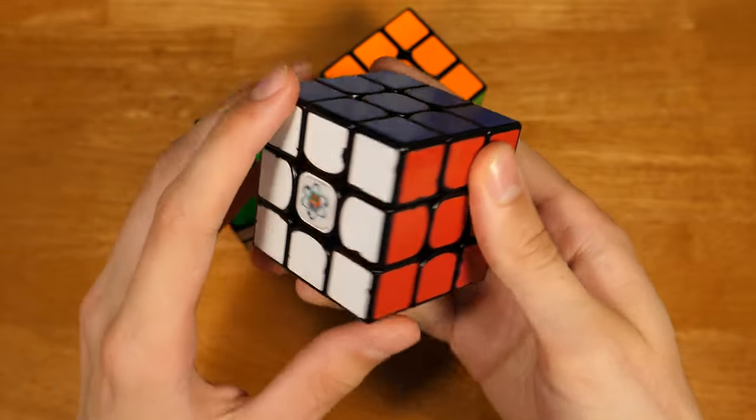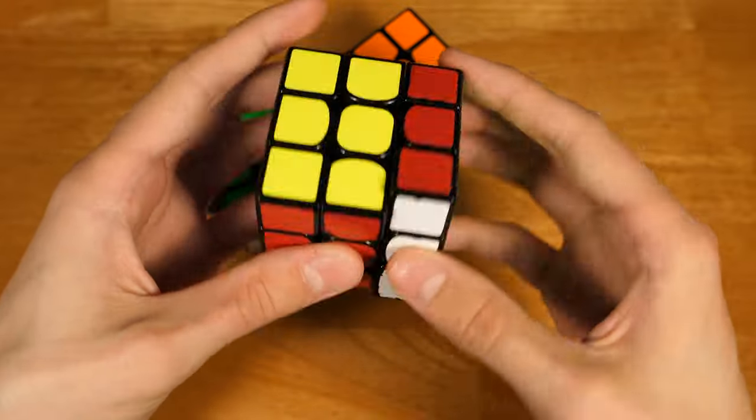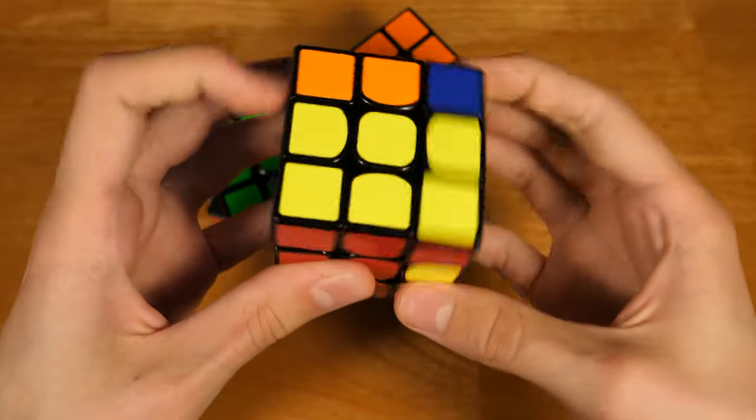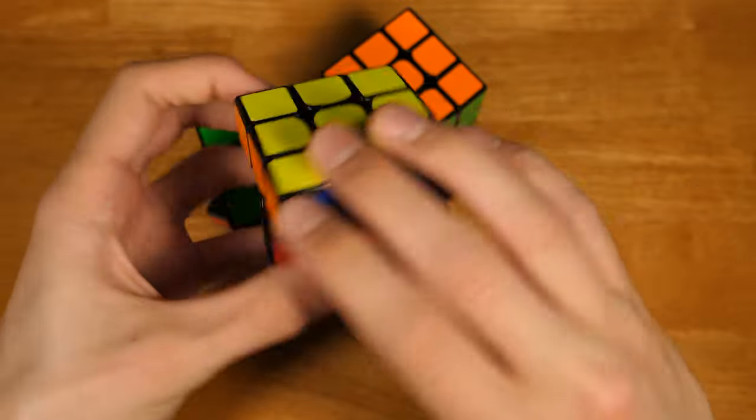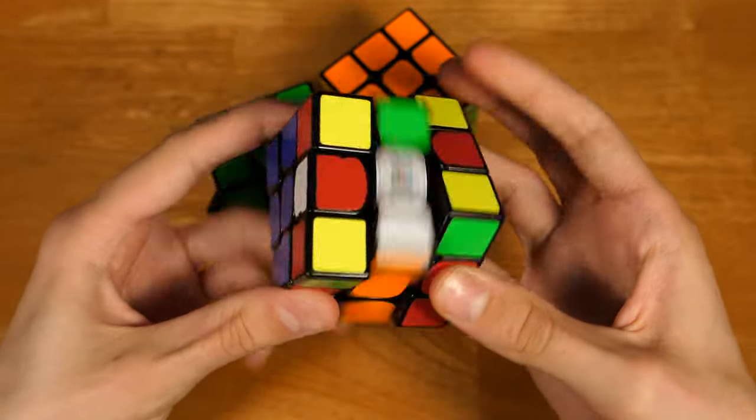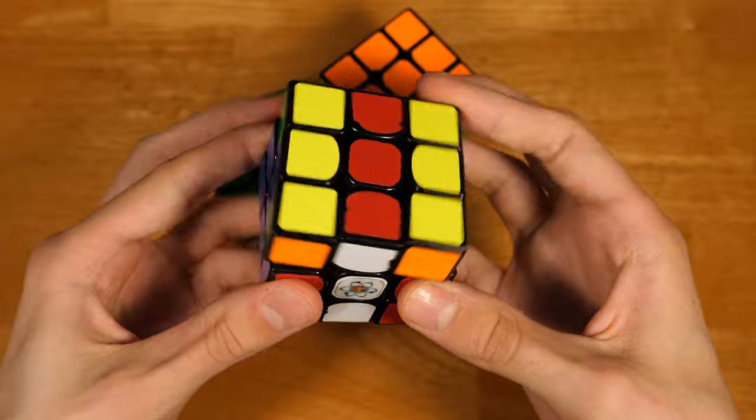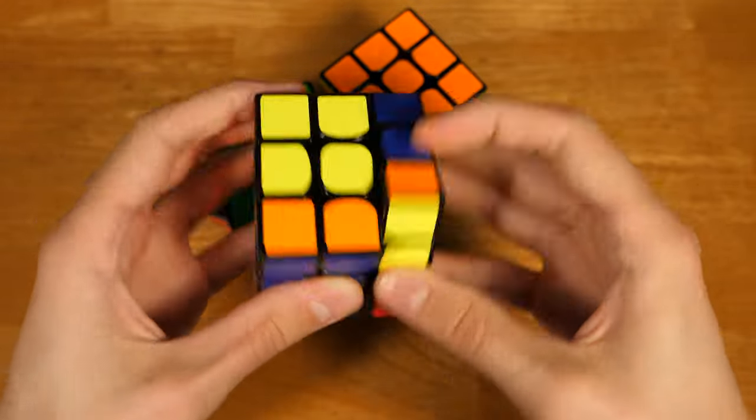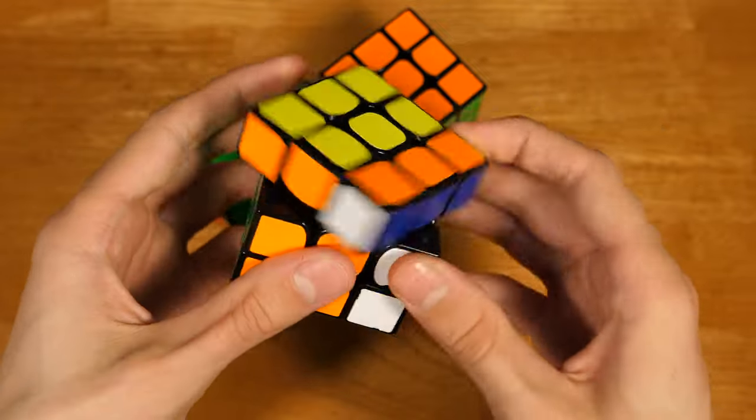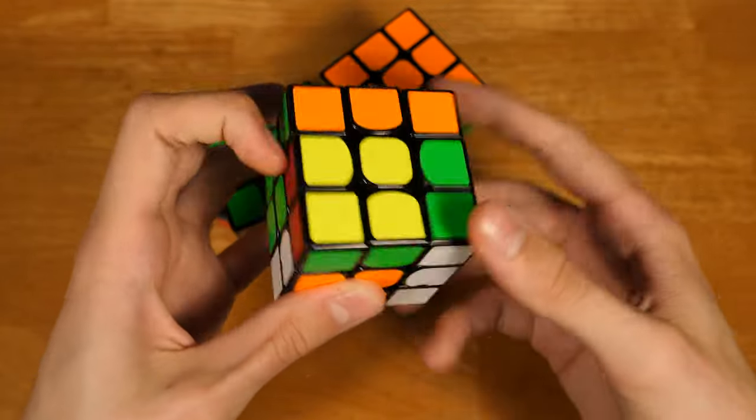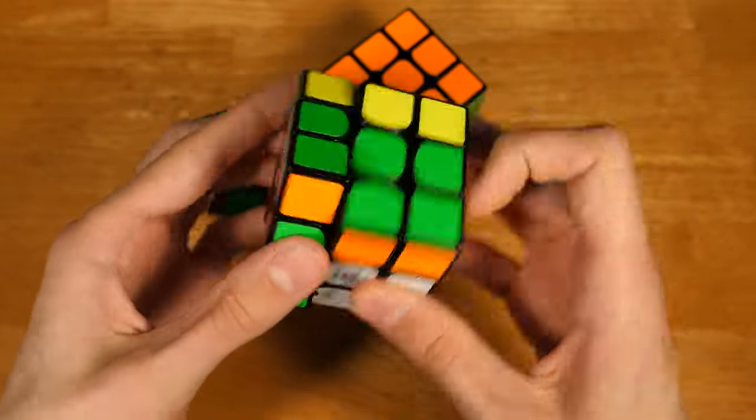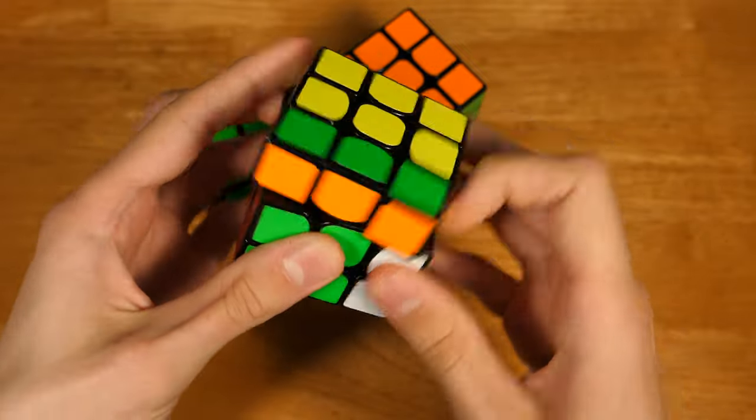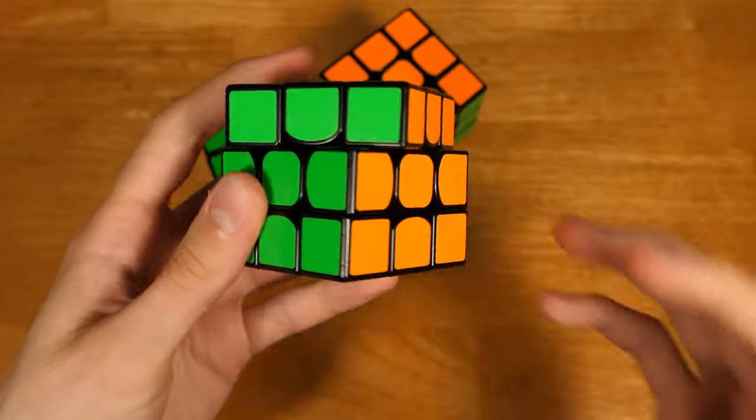Next up is the Vulk-M. This has the heaviest magnets out of the three cubes. The magnets have lightened up over time, and I do prefer the slightly lighter magnets, but the heavy magnets are nice when I'm trying to relax, maybe I'm a little bit under stress and trying to get back into relaxation mode.